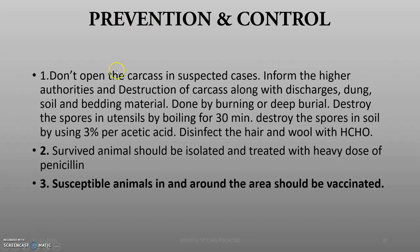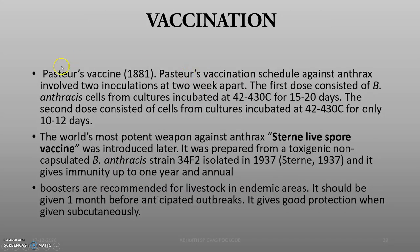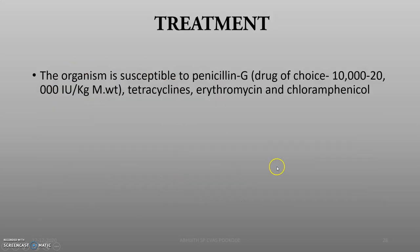Prevention and control: do not open the carcass in suspected cases and always perform decontamination. Susceptible animals should be vaccinated. Vaccination is done using the Peck two-passage vaccine and also the Sterne live spore vaccine, which is strain 34F2 isolated in 1937. Treatment is by penicillin G, tetracycline, erythromycin, and chloramphenicol.